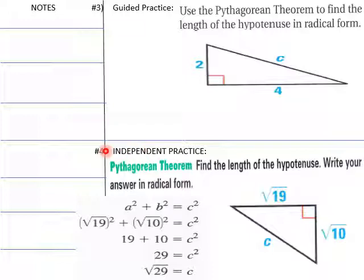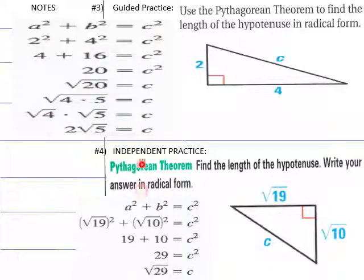It must be Christmas time; I did your independent practice that comes up first. I came up with the square root of 29 for c here, and then 2 times square root of 5 for c on the guided practice. Got square root of 20; we factor out square root of 4, which is 2 times square root of 5. So that's your c there.